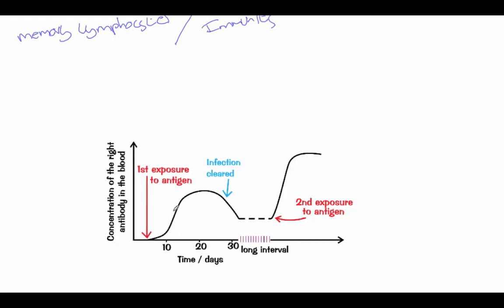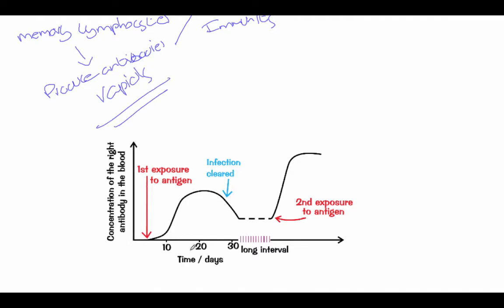Your first response is very slow, but after you've responded, these memory lymphocytes will remember the microorganisms and the antigens, and will produce antibodies really fast. If you look at the graph, after someone's been exposed to an antigen it takes about 30 days to clear the infection. But if you come across it again, the antibody concentration goes sky high fast because you already have memory lymphocytes — so you don't get ill and the infection is cleared very quickly.